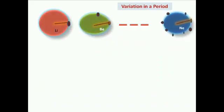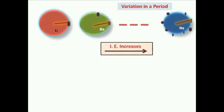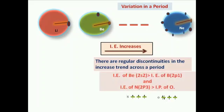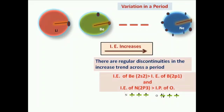Let us discuss the trend of ionization energy in a periodic table. In a period, if we move from left to right, ionization energy increases. However, there are regular discontinuities in this trend. For example, the ionization energy of beryllium, with outer electronic configuration 2s², is greater than that of boron, which has outer electronic configuration 2p¹.